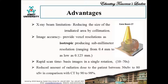CBCT includes various advantages over other three-dimensional imaging modalities, certified by various studies. Regarding X-ray beam limitation, reducing the size of the irradiated area by collimation — that is, choosing a particular FOV of the primary X-ray beam to the area of interest — minimizes the radiation dose. Regarding image accuracy, all CBCT units provide voxel resolution that is isotropic, equal in all three dimensions, whereas in CT these are anisotropic. This produces sub-millimeter resolution ranging from 0.4 mm to as low as 0.125 mm.